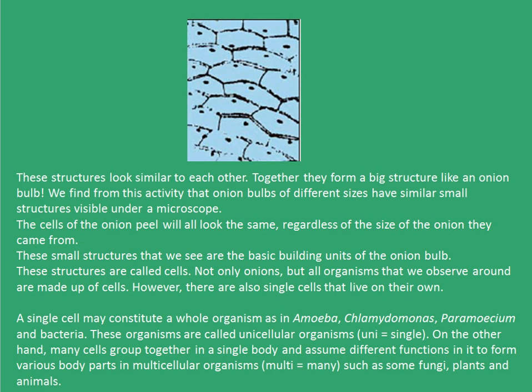When we see this under a microscope, these structures look similar to each other, as shown in this picture. Together, they form a big structure like an onion bulb. We find from this activity that onion bulbs of different sizes have similar small structures visible under a microscope. The cells of the onion peel will all look the same regardless of the size of the onion they come from. These small structures are the basic building units of the onion bulb, and these structures are called cells.